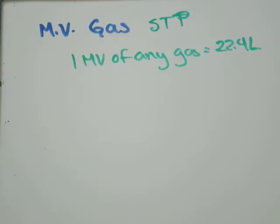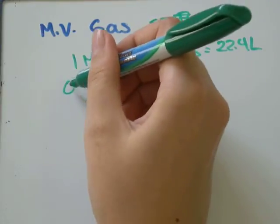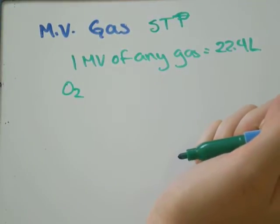So, one molar volume of any gas will fill 22.4 liters of space. Let's do an example where we calculate the volume of a certain amount of moles of a gas. So, let's say we have oxygen gas, O2.